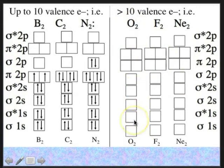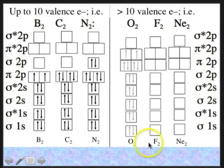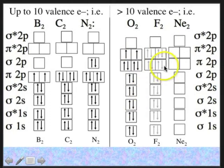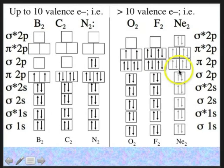Oxygen has 8 electrons total, so O2 has 16 electrons, and we fill the MO diagram accordingly under the second energy pattern. Fluorine brings 2 more electrons, giving F2 with 18 electrons. Finally, Ne2 fills in the pattern completely.